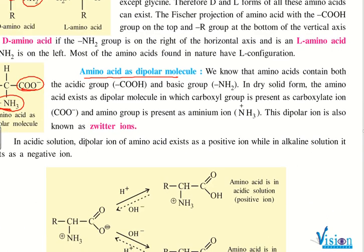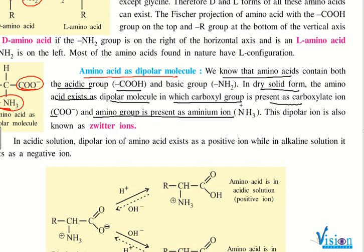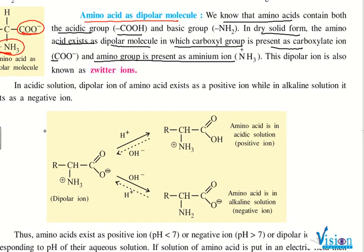As written here, we know that amino acid contains both acidic as well as basic groups. In dry solid form, the amino acid exists as a dipolar molecule, in which the carboxyl group is present as carboxylate ion (COO⁻) and the amino group is present as ammonium ion (NH3⁺). This dipolar ion is also known as a zwitterion.